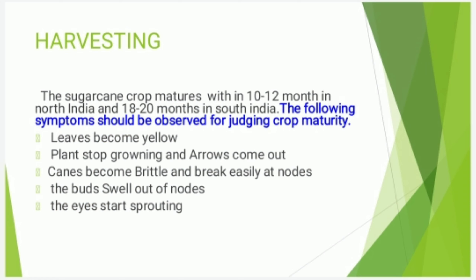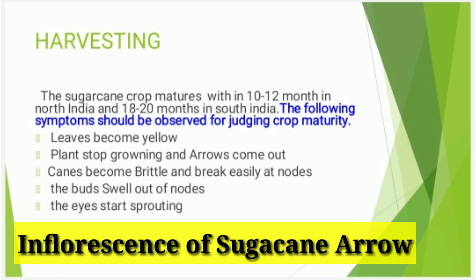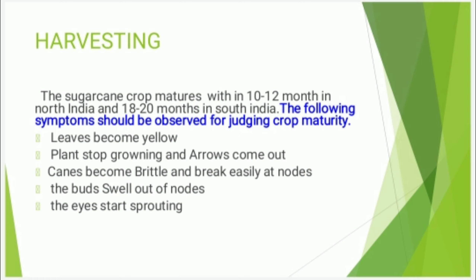Harvesting of Sugarcane: The sugarcane crop matures within 10 to 12 months in North India and 18 to 20 months in South India. Symptoms for judging crop maturity include: leaves become yellow, plants stop growing and the arrow comes out, canes become brittle and break easily at nodes, canes produce metallic sounds, the buds swell out of nodes, and the eyes start sprouting.